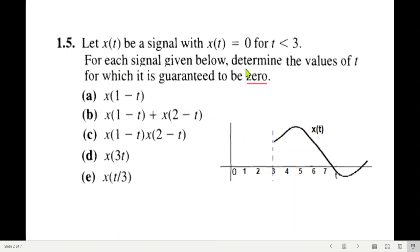Now for each signal given below, determine the values of t for which it is guaranteed to be zero. So these are the five cases we have to consider and see when is the signal as 0.